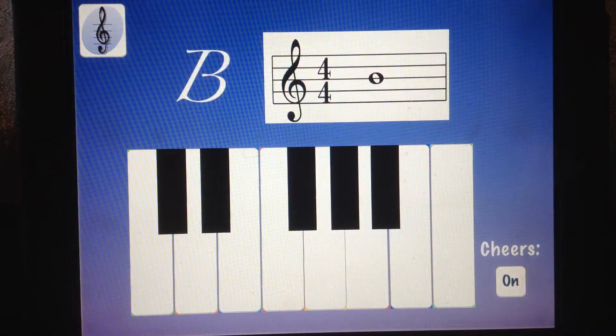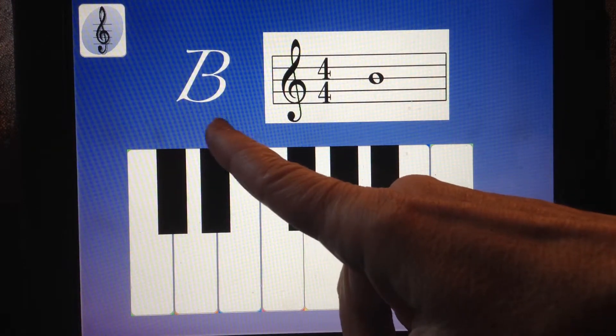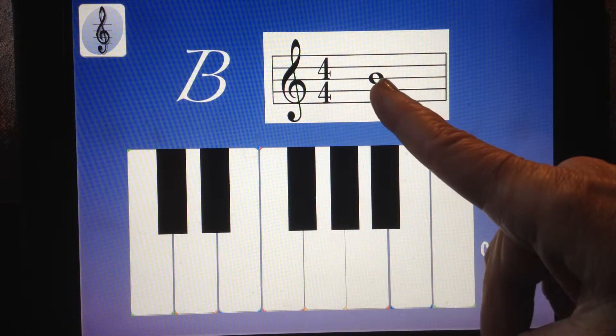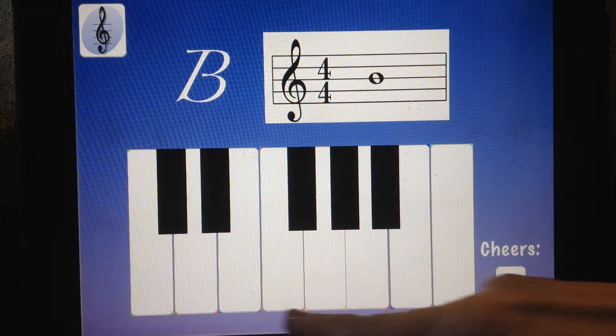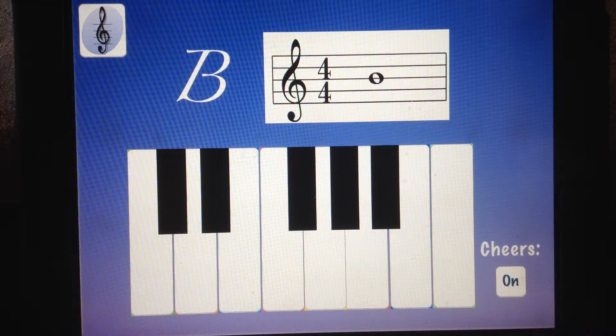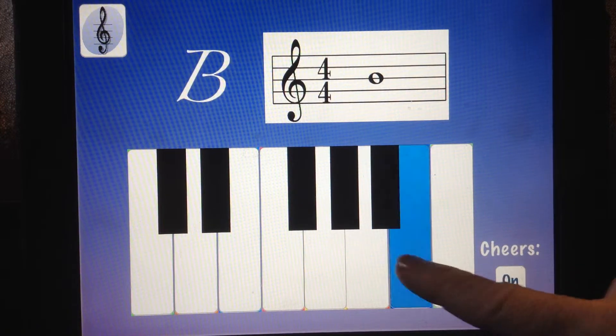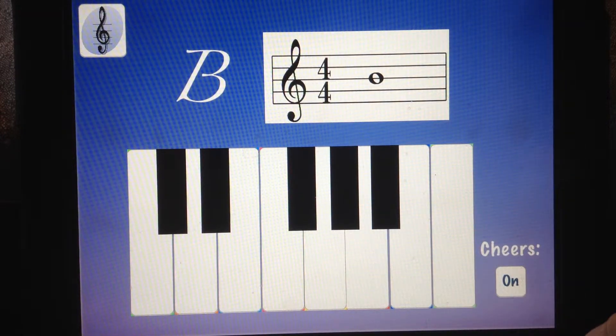On level two, the little boy will name the note. You'll see where the note is on the staff, but notice there are no key names written down, so now you need to remember where that B is.